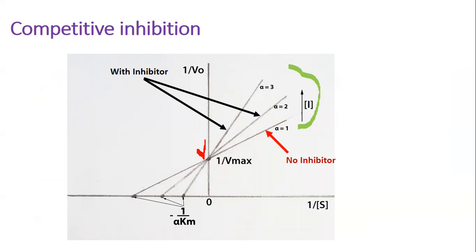The y-intercept represents 1 divided by V-maximal, which does not change. The x-intercept represents minus 1 divided by the Michaelis constant. You can see that the x-intercept changes, and the value of the Michaelis constant increases.